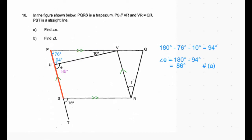Now consider the straight line PUS. The angle at U is 180 degrees. One side of the angle is 94 degrees, so the other side is 180 minus 94, which equals 86 degrees. This gives the answer to part A: angle A is 86 degrees.